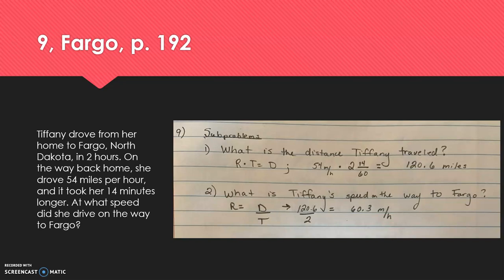So in terms of sub-problems, one initial problem that comes to mind is what is the distance that Tiffany traveled? Because that's uniform no matter her speed. We know that rate times time equals distance. We know that her rate going home is 54 miles per hour. We also know that she traveled 14 minutes longer than she did on the way there, making her travel two hours and 14 minutes, or expressed in terms of hours would be two hours and 14 over 60. When we multiply those together, we get that she traveled a distance of 120.6 miles. The next problem is what is Tiffany's speed on the way to Fargo? And that is the final answer as well.